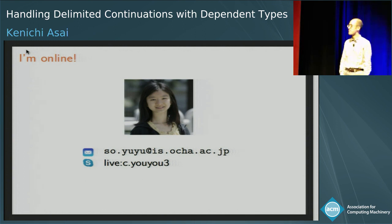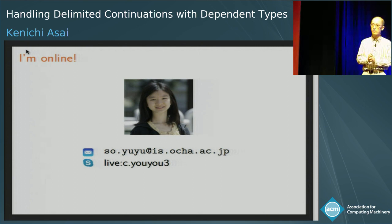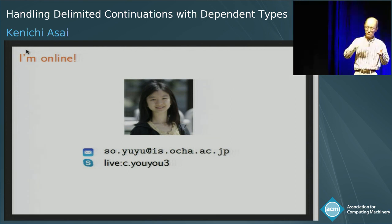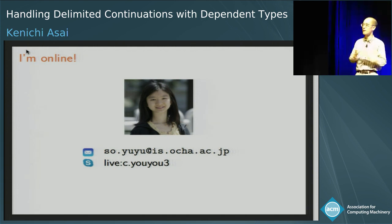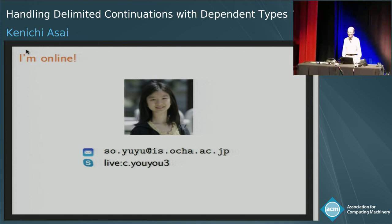Final question: are there small complete program examples tried out using dependent types to express properties? The speaker says this is currently quite a theoretical work. However, in programming with Agda or Coq, whenever one wants effects they need to write in monadic style, but with shift and reset one can do all things in direct style, which is very useful and motivates the research.